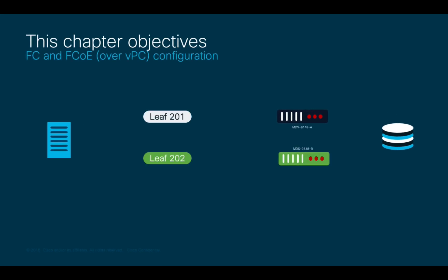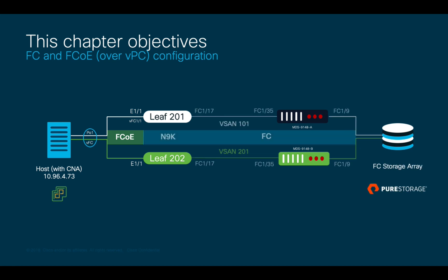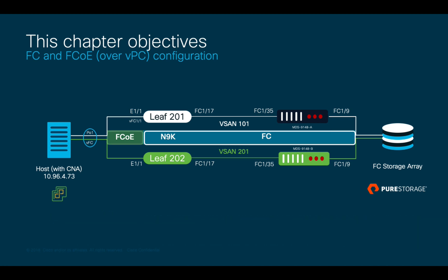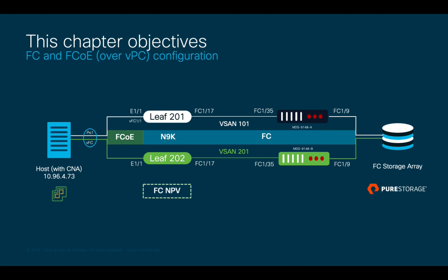Today, I will show you how to connect a VMware server running FCoE through a CNA to its Fiber Channel storage array, in our case a Pure Storage. Keep in mind that you could also run end-to-end Fiber Channel from an HBA or FCoE if you wanted to. In our scenario, we will be configuring a mixture of Fiber Channel and FCoE on ACI to show both protocols, and zoning will be defined on a couple of MDS switches where my storage array is connected.